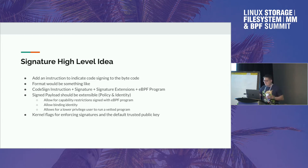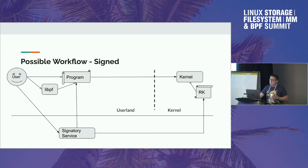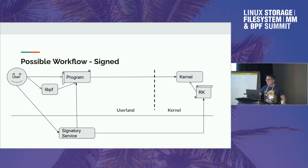I think this makes sense. I want to introduce the concept of a signatory service which may or may not be on the same machine. We should definitely have a reference implementation that ships on the machine to make it easy to test this. But if you're talking at fleet scale or a big business with a bunch of machines, you may want to have this off somewhere else, kind of like your identity and access management.